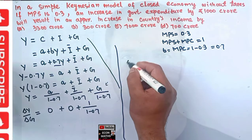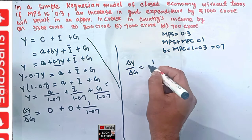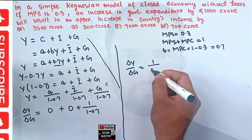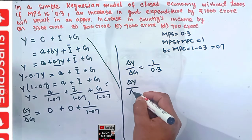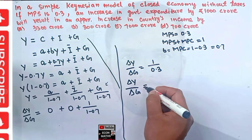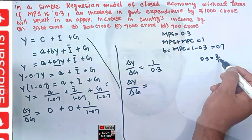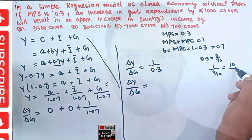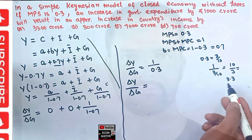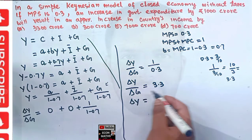So delta Y / delta G = 1 divided by (1 minus 0.7) = 1 divided by 0.3, which equals 10/3, approximately 3.3. This means delta Y = 3.3 times delta G.